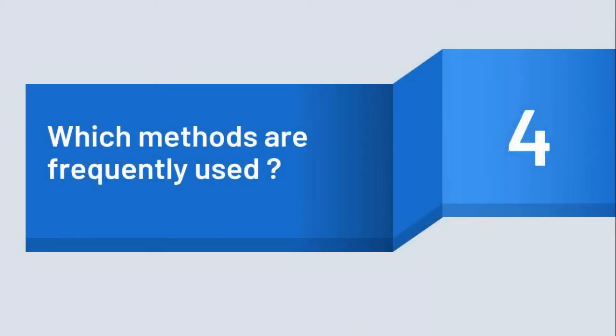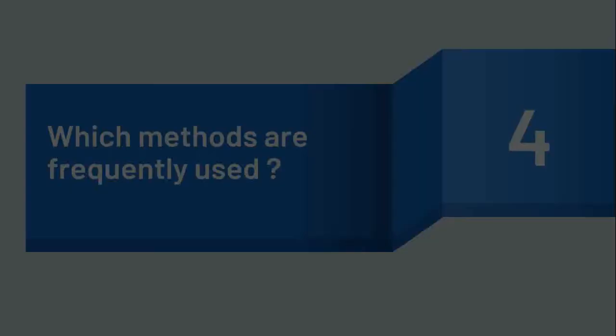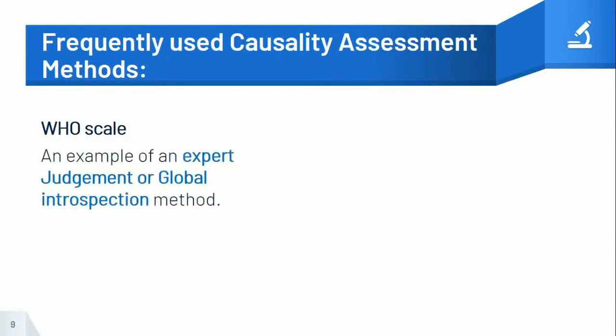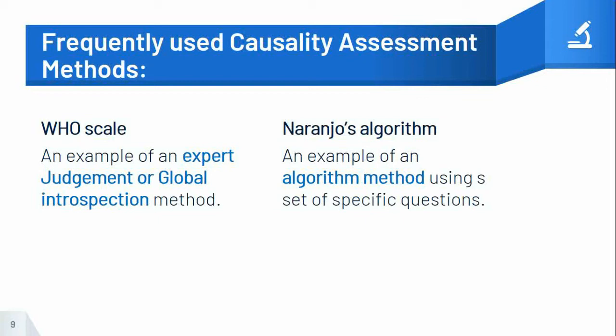There is no universal standard in causality models, but a few are used more frequently. In this presentation we will focus on two methods: one is the WHO scale, an example of an expert judgment or global introspection method, and the other is Naranjo's algorithm, which is an example of an algorithm using a set of specific questions.